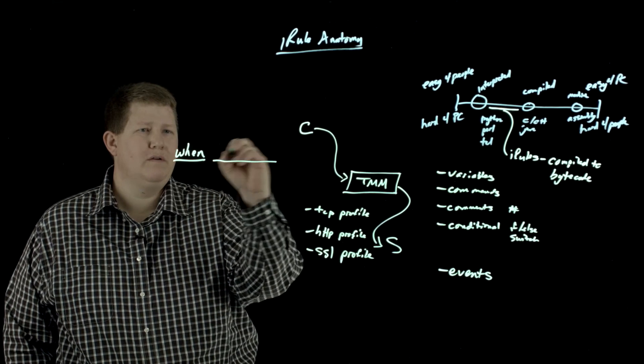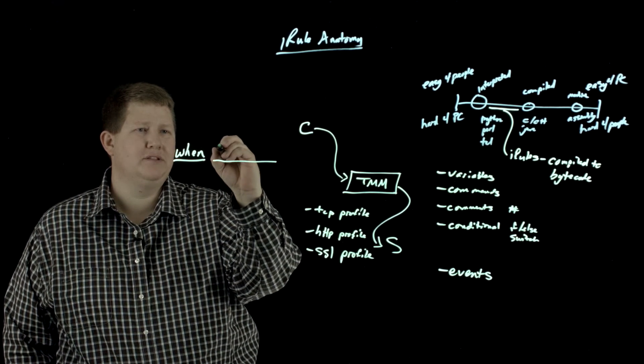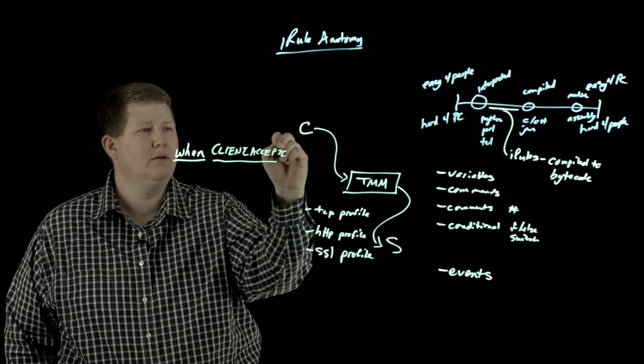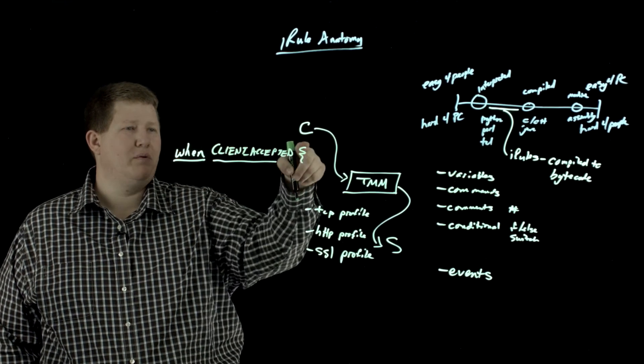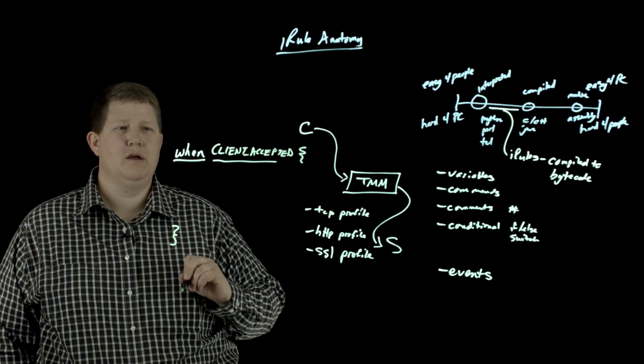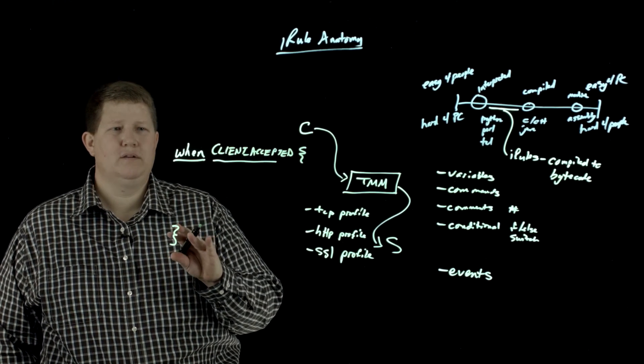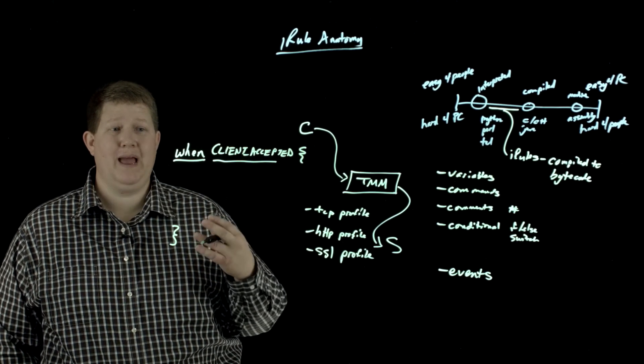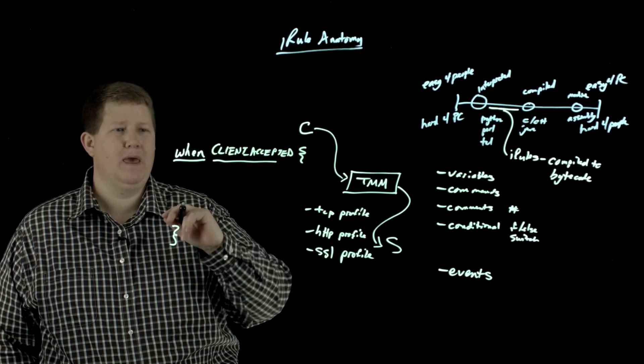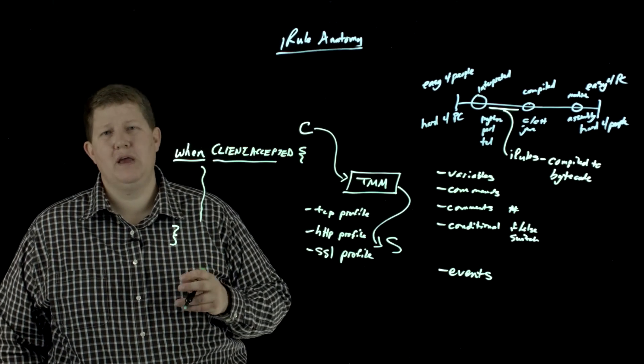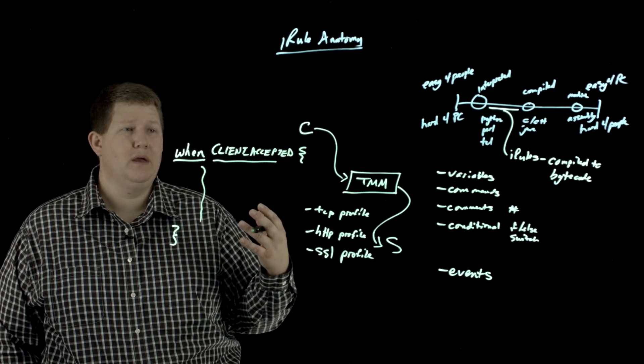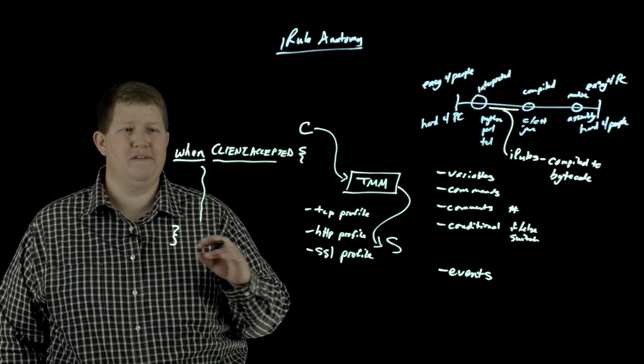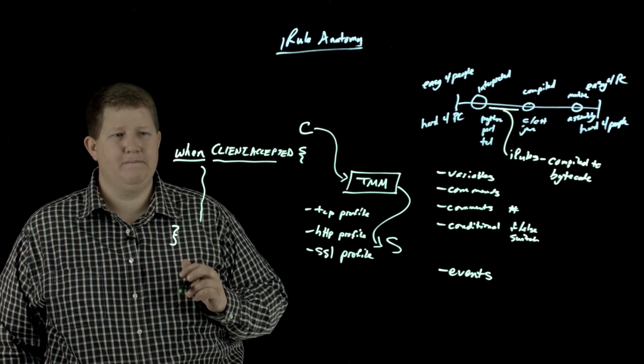So you'll fill in an event here, let's do CLIENT_ACCEPTED. And then the bracket here and here denotes the event. So the CLIENT_ACCEPTED happens when a TCP handshake happens. So once that happens, the TMM will fire this event, and then you can do any number of things in here. If you want to log the source IP, if you want to extract something from TCP payload, you can do all of that in here. If you want to log events that happen in the context of this event, then...